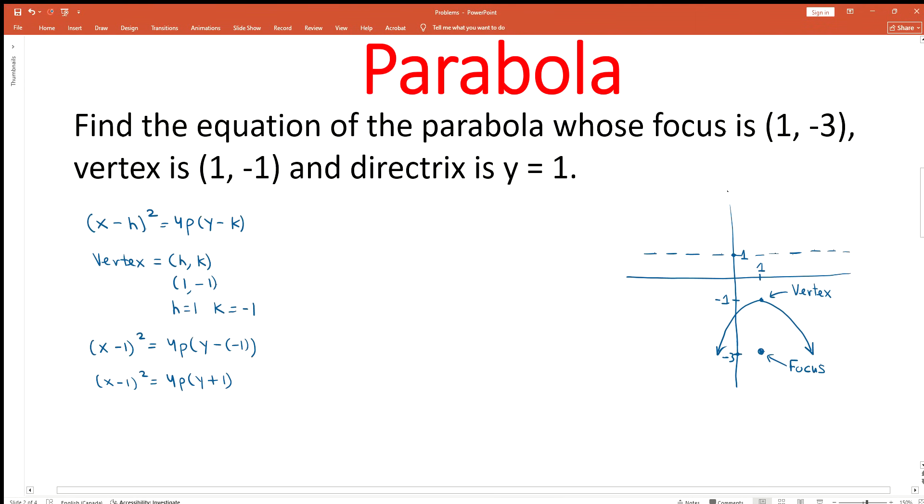The magnitude of p represents the distance between the vertex and the focus or the distance between the vertex and the directrix. As we can see in our sketch, the focus is 2 units below the vertex and the directrix is 2 units above the vertex. Therefore, the magnitude of p equals 2.